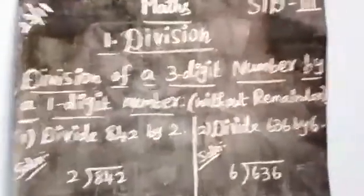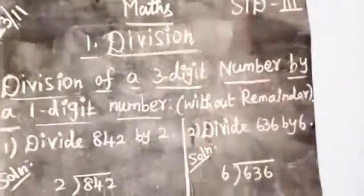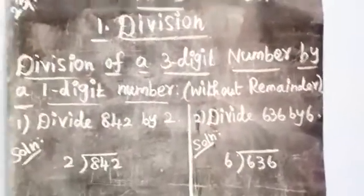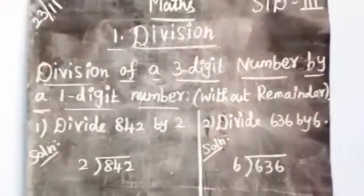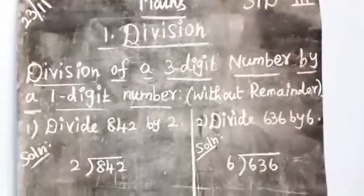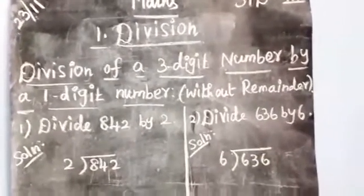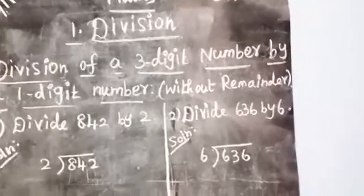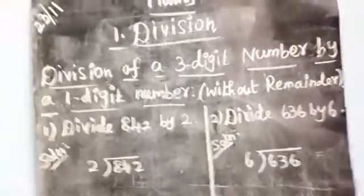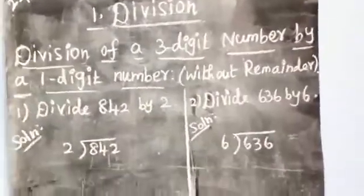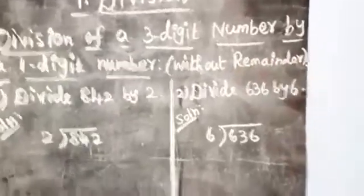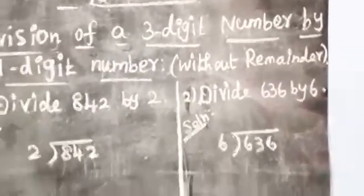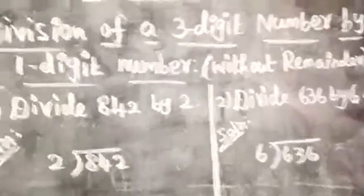Good morning students, welcome back to our math class. Last class we learned about division of a two-digit number by a one-digit number. Today we are going to see division of a three-digit number by a one-digit number. First type: without remainder. Without remainder means the remainder is equal to zero.